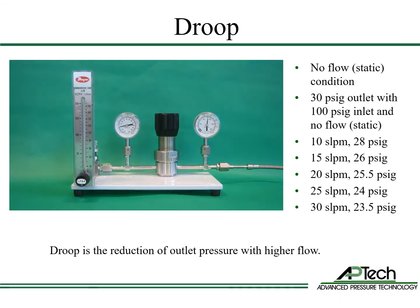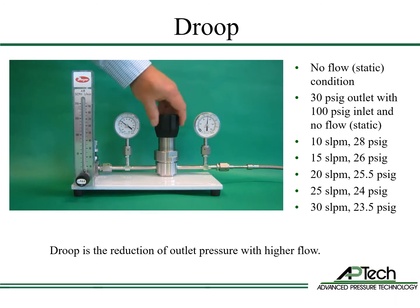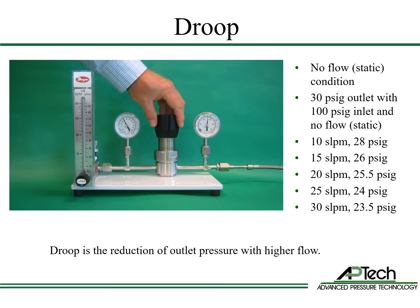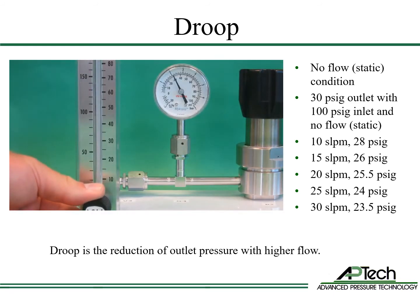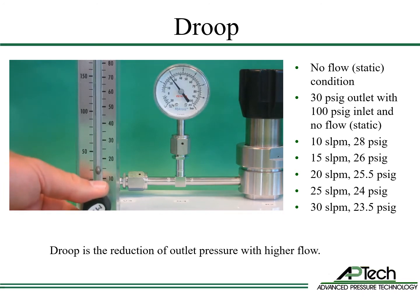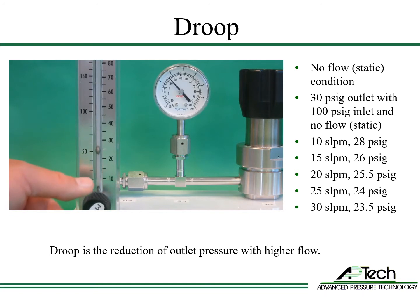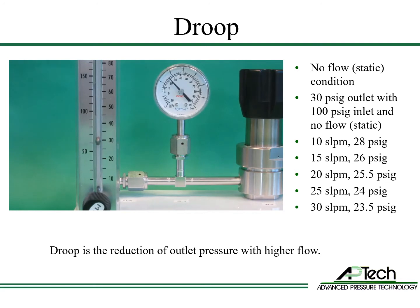Droop is the reduction of outlet pressure with flow. In this example, an AP1000's inlet pressure is set to 100 psi. The regulator is opened and adjusted to 30 psi outlet pressure with no flow. As flow begins, the outlet pressure drops. At 10 liters per minute, the outlet pressure droops to 28 psi. As flow increases to 15 liters per minute, the outlet pressure drops to 26 psi. And at 30 liters per minute, the outlet pressure further drops to 23.5 psi.